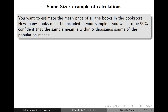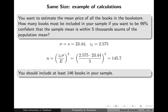For example, we go to the store and want to be 99% confident that the sample mean is within 5 units of the population mean. Using the standard deviation from our previous sample of 32 items, and the critical point for 99% confidence of 2.575, substituting everything into the formula gives n equals 145.7, so we need at least 146 items to achieve that error margin.